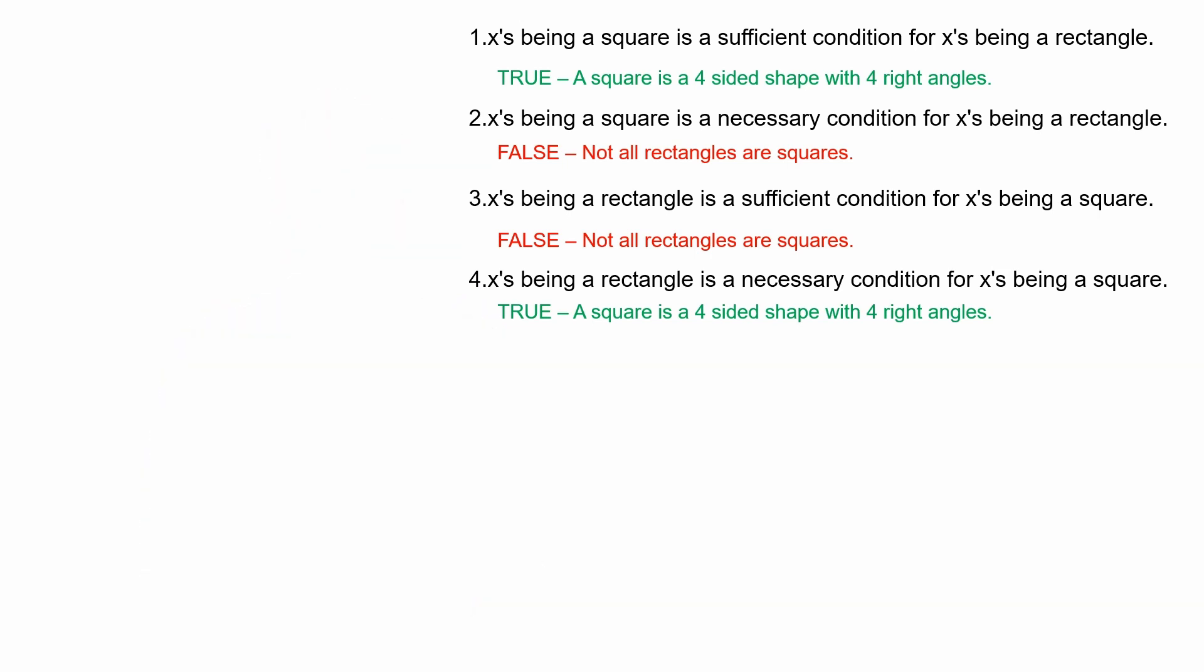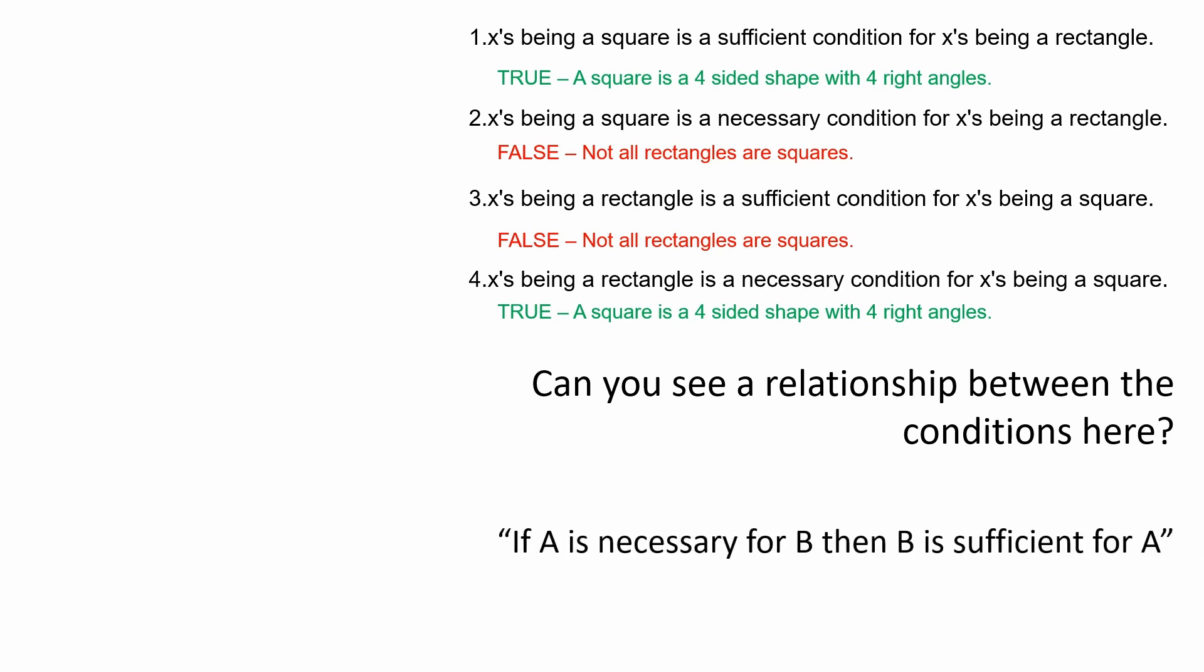And this is editing Adam, because apparently I forgot to write the part of the script where I asked, can you see the relationship between the different conditions here? It's something we saw in the main video. Pause if you would like to think about it. But again, we see this idea that if A is necessary for B, then B is sufficient for A. For example, in question one, X as being a square is a sufficient condition for X as being a rectangle. And for the same reason, in question four, X as being a rectangle must be a necessary condition for X as being a square. We can kind of use the same piece of evidence to justify both. A square is a four-sided shape with four right angles. This will be part of our explanation. Although this is an oversimplification, and very little is this easy to explain in the real world.